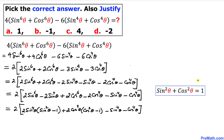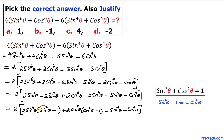Now let's recall the famous trigonometric identity: sine squared theta plus cosine squared theta equals 1. Rearranging, we get sine squared theta minus 1 equals negative cosine squared theta. So inside the parentheses where we have sine squared theta minus 1, I am going to replace it with negative cosine squared theta.